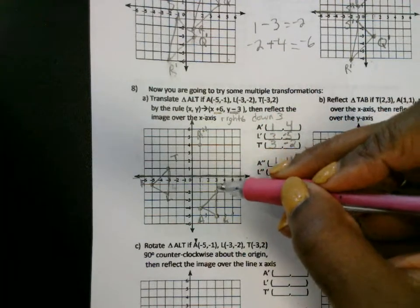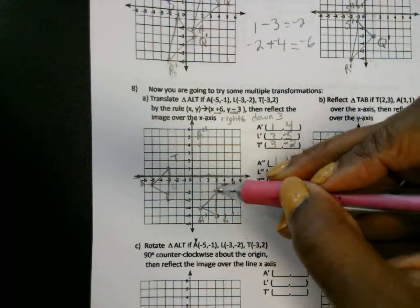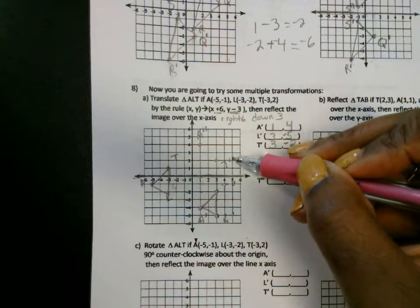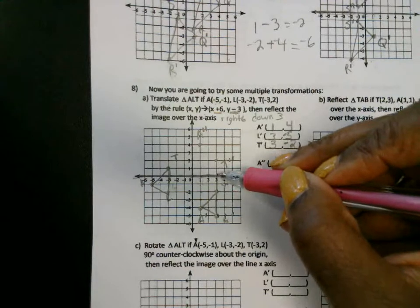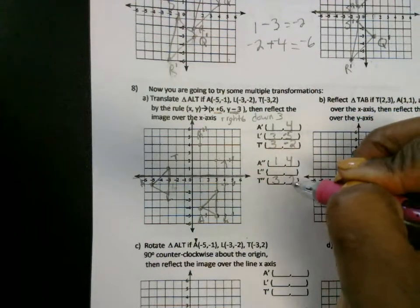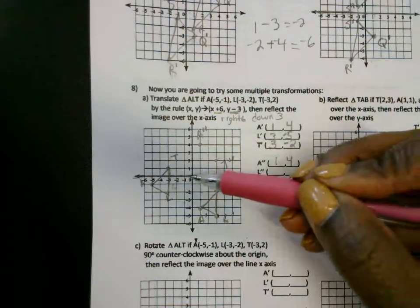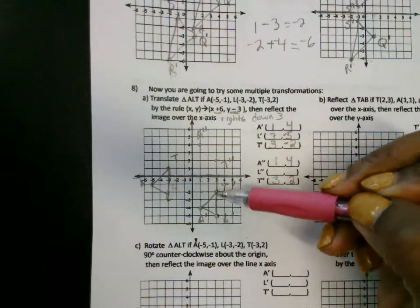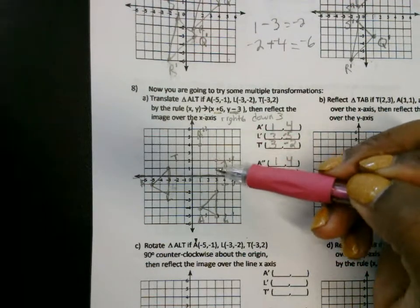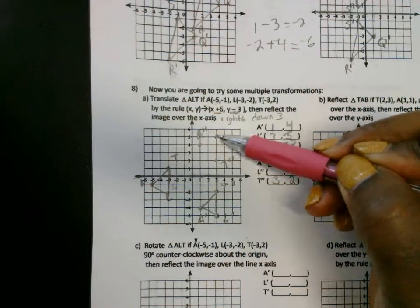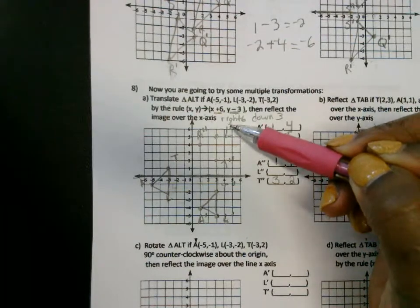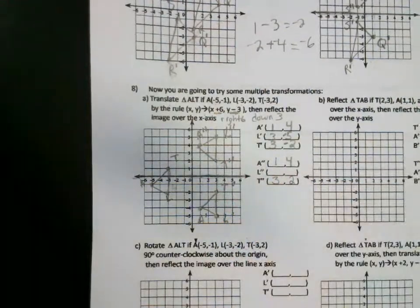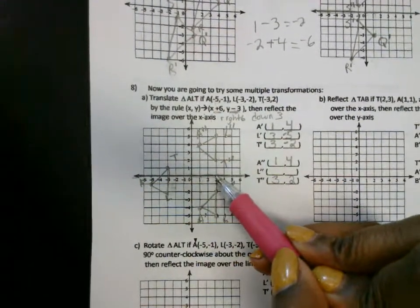How far is T? T is two below the line. So when you flip it, it's going to be two above. This is where T is going to land — T prime prime. This is three, two. L: how far is it below the line of reflection? Five. So when you flip it, it's going to be five above. One, two, three, four, five. This is where L is — L prime prime, the second time it's been moved. That ordered pair is three comma five.